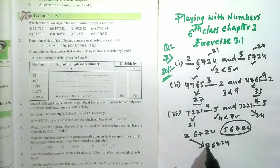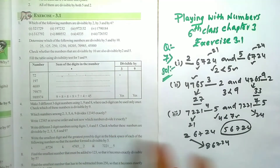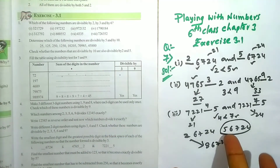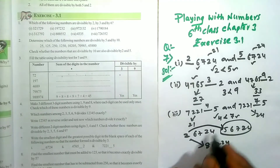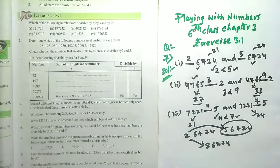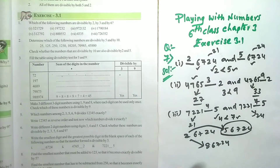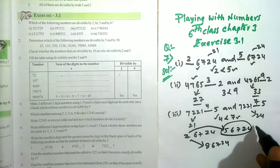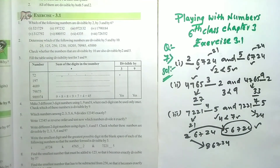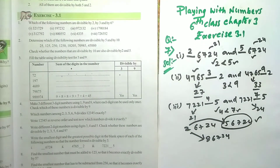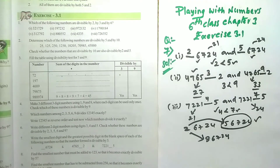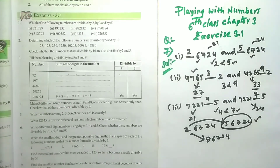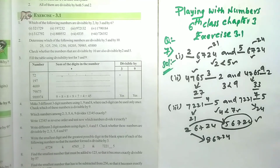We have 2 numbers to be divisible by 3. We have 3 numbers to be divisible by 3, but we have 2 numbers to be divisible by 3. Thank you.